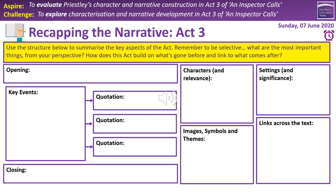That brings us to another way to draw things together — a chance to summarise the events from Act 3. We've got boxes for the opening (how does it start), the closing (how does it finish), key events in the act, quotations linked to those events, characters and relevance — with Eric obviously important — images, symbols and themes, settings and significance, and links across the text. This should be the same format as your Act 1 and Act 2 summaries. About five minutes should be enough — a useful quick summary for tracking what happens and why it's important.